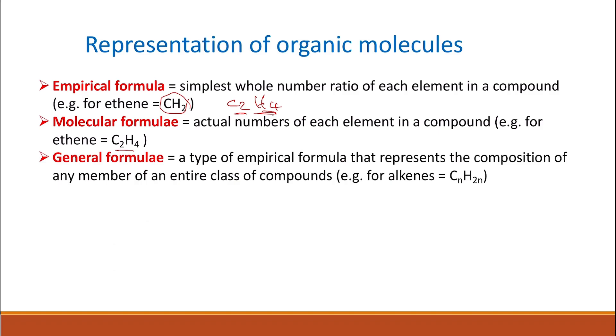The third formula is called the general formula, and a general formula is a type of empirical formula that represents the composition of any member of an entire class of compounds. For example, if we have something like alkanes, they have a general formula of CnH2n plus two. That means whatever the number of carbon atoms in your molecule, the number of hydrogen atoms will always be double that number plus two. So if you have one carbon atom, it's going to be CH4. If you have two carbon atoms, it's C2H6, and so on.